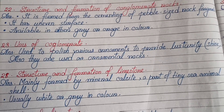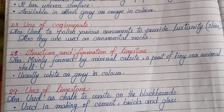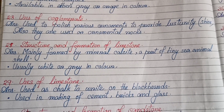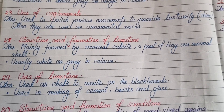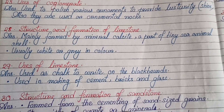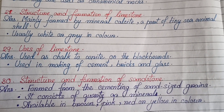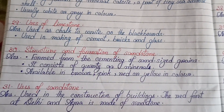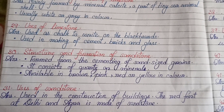Uses of conglomerate: used to polish various ornaments to provide luster (shine); also used as ornamental rocks. Structure and formation of limestone: mainly formed by mineral calcite, a part of tiny sea animal shells; usually white and gray in color. The uses of limestone have already been covered, so we move to the next question.